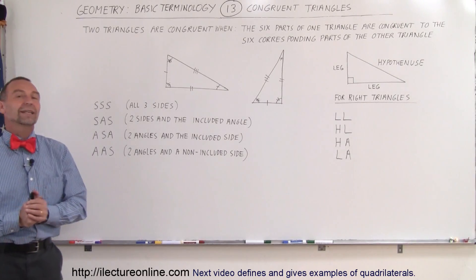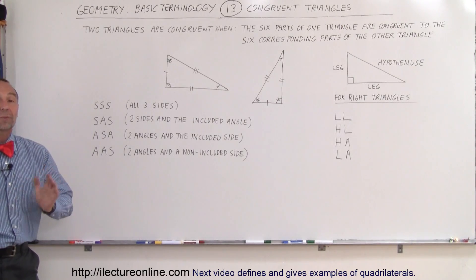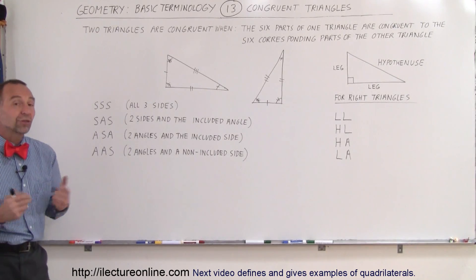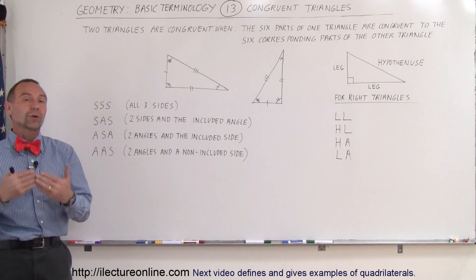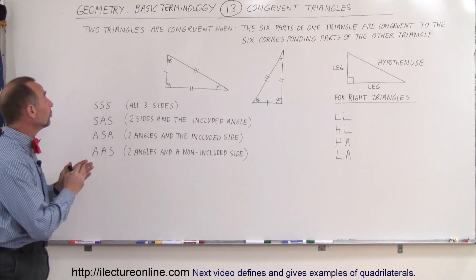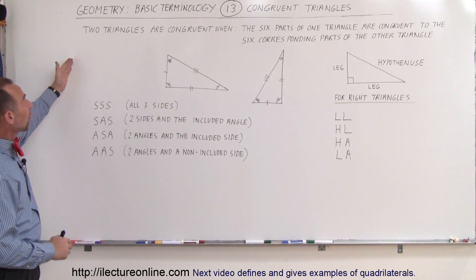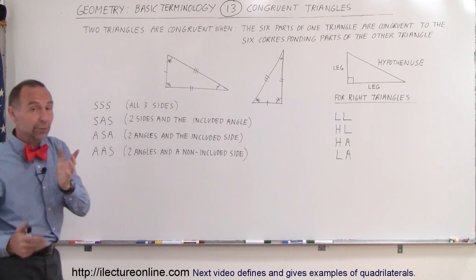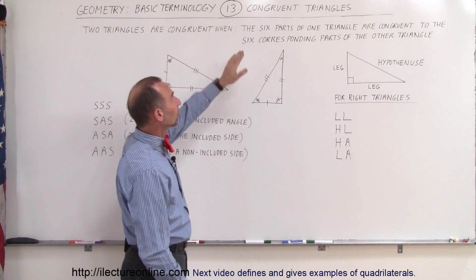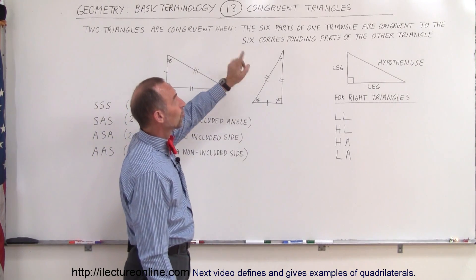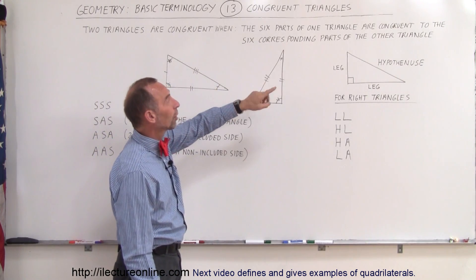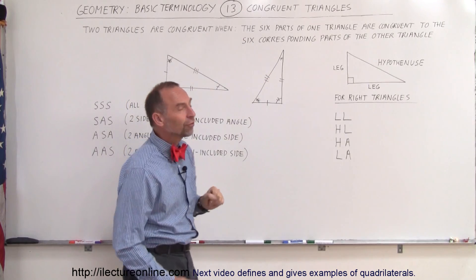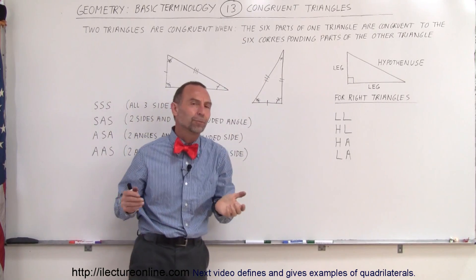Welcome to our lecture. We're going to talk about congruent triangles. What does that mean? Well, the definition is as follows: two triangles are congruent when the six parts of one triangle are congruent to the six corresponding parts of the other triangle.